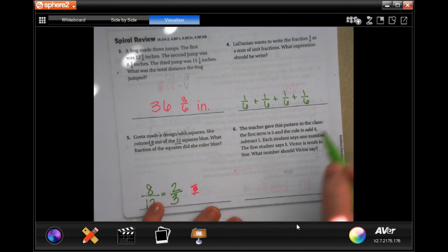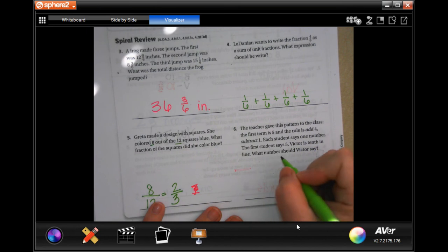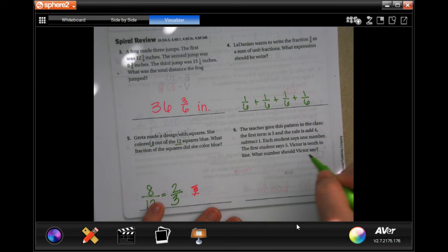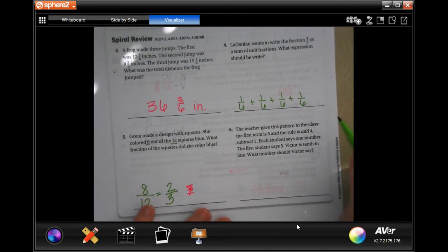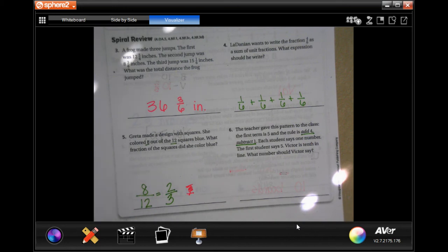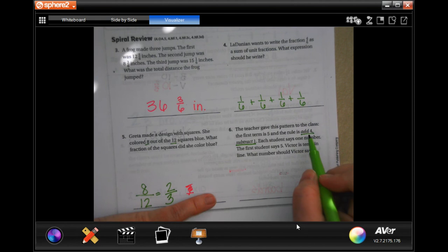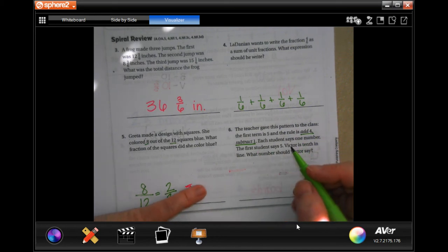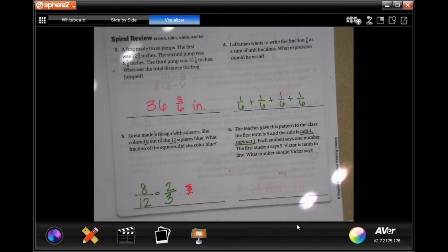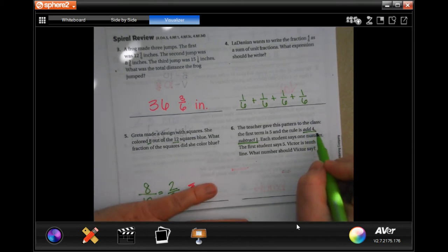The teacher gave us this pattern to the class. The first term is 5. The rule is add 4, subtract 1. Each student says one number. The first student says 5. Victor is tenth in line, what number should Victor say? So here's the thing y'all, when the rule is add 4, subtract 1, we're gonna go and just add 3 because when you're adding 4 then subtracting 1, it's just adding 3. So hold on just a second here.